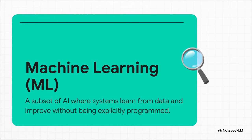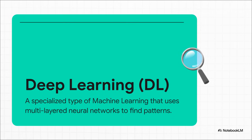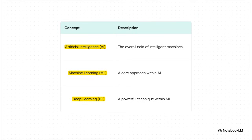So how do we actually do that? Well, one of the most powerful ways is machine learning. Instead of a programmer sitting down and writing rules for every single possibility, we feed the system tons and tons of data and let it figure out the patterns for itself. This is how an AI gets experience, just like we do. And then inside machine learning, there's this supercharged technique called deep learning. This is the real heavy lifter. It uses complex structures called neural networks to find incredibly subtle patterns in massive amounts of data. This is the engine behind the stuff that feels like magic — recognizing your face in a photo or translating languages in real time.